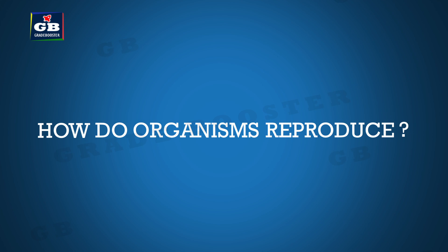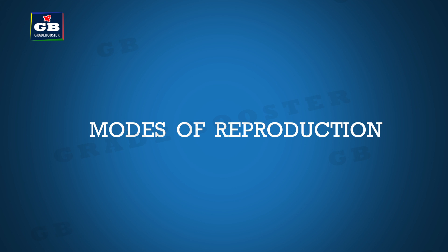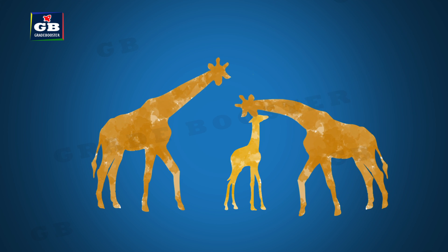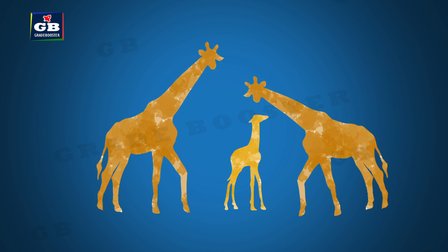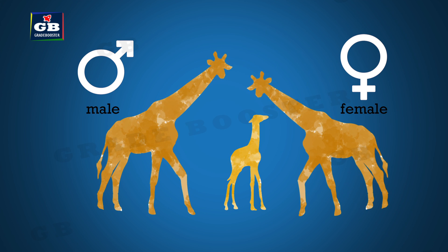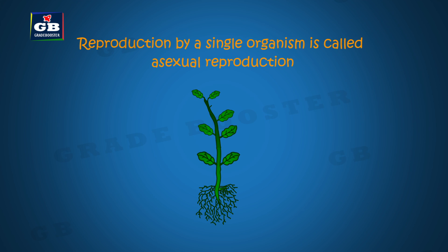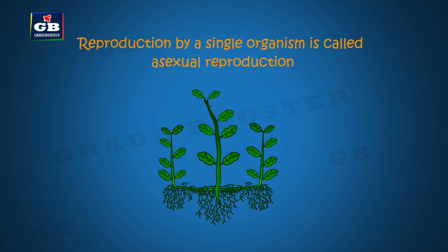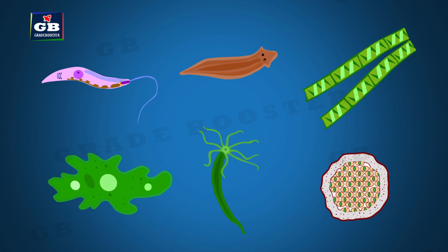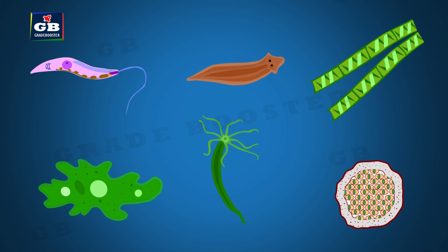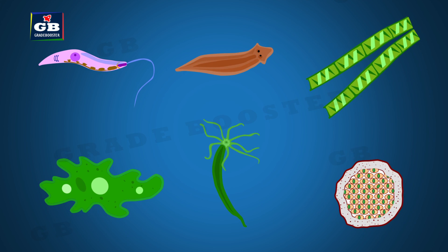How do organisms reproduce? Generally when we think of reproduction, we consider two organisms — one male and one female. But in some cases, a single organism can reproduce without any pairing. This is called asexual reproduction. Different organisms show different modes of asexual reproduction.